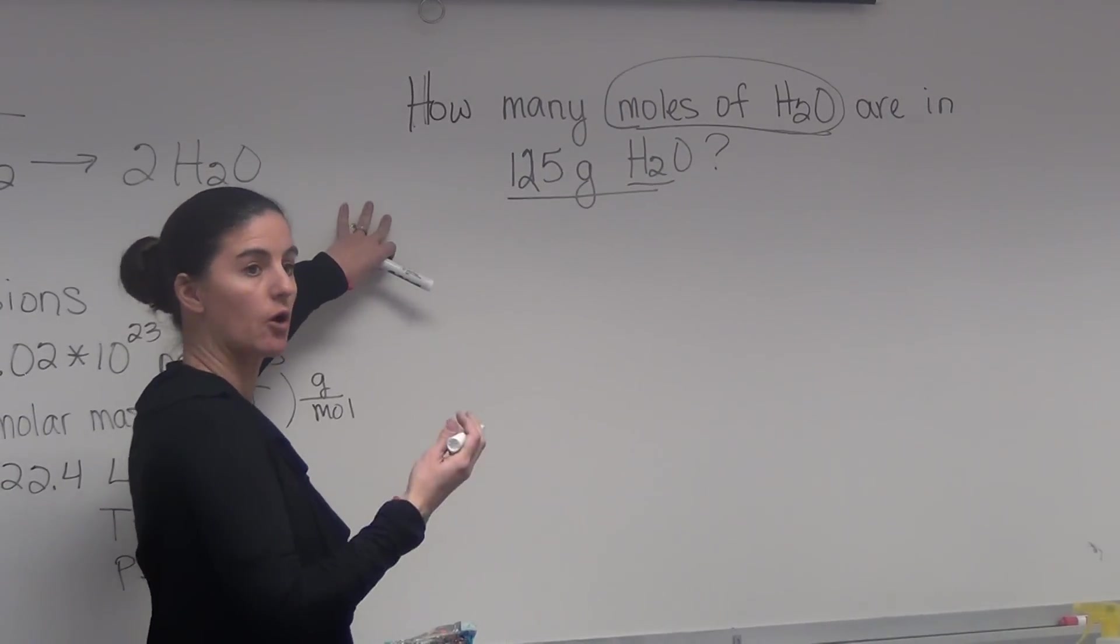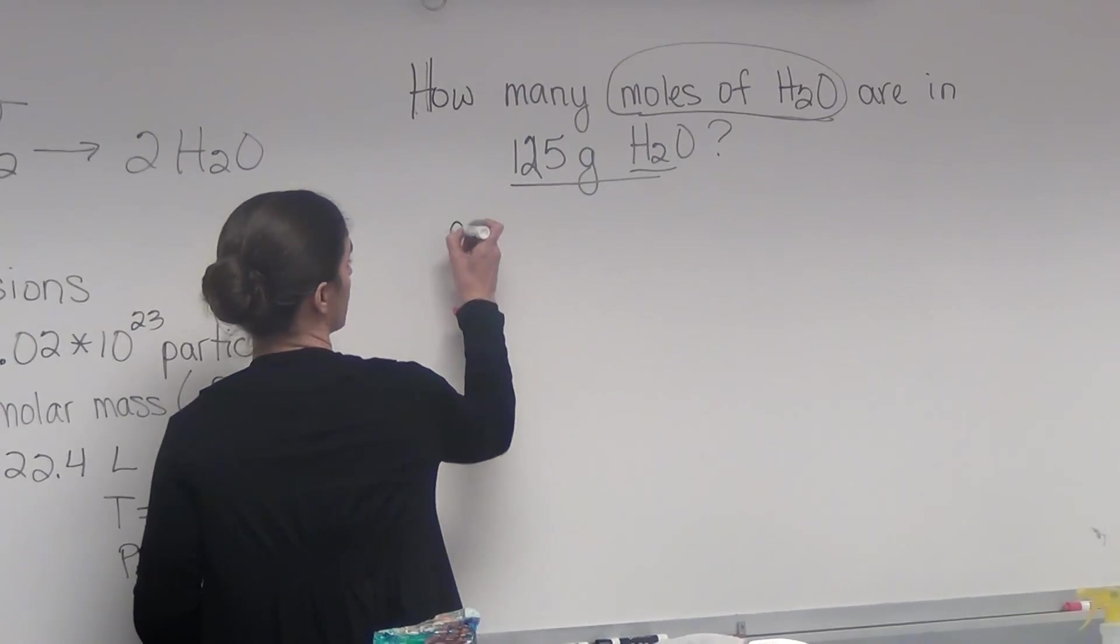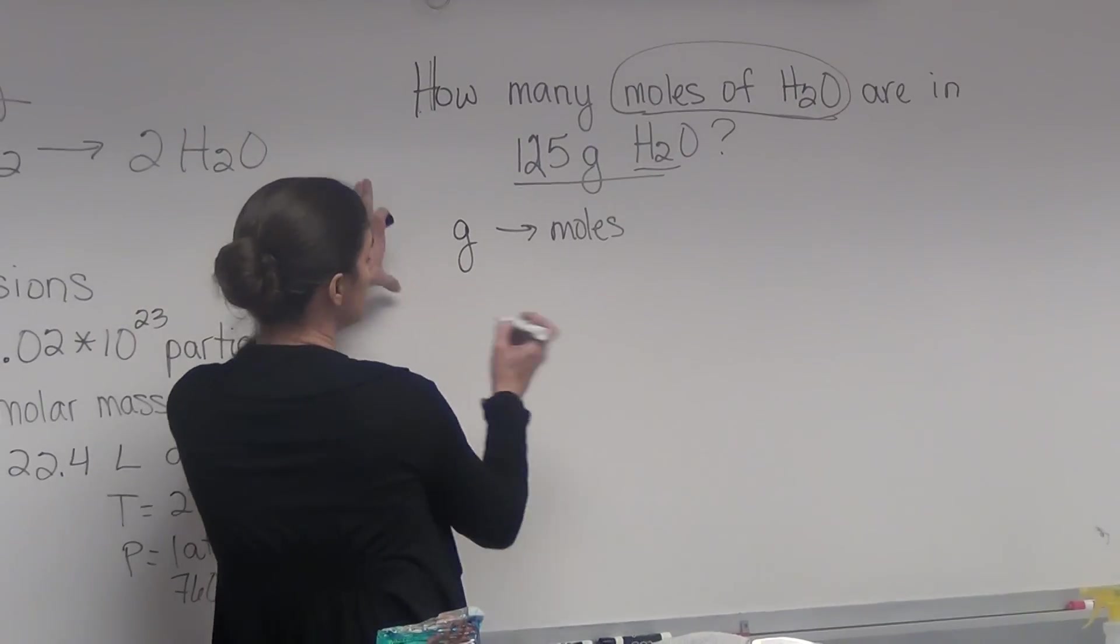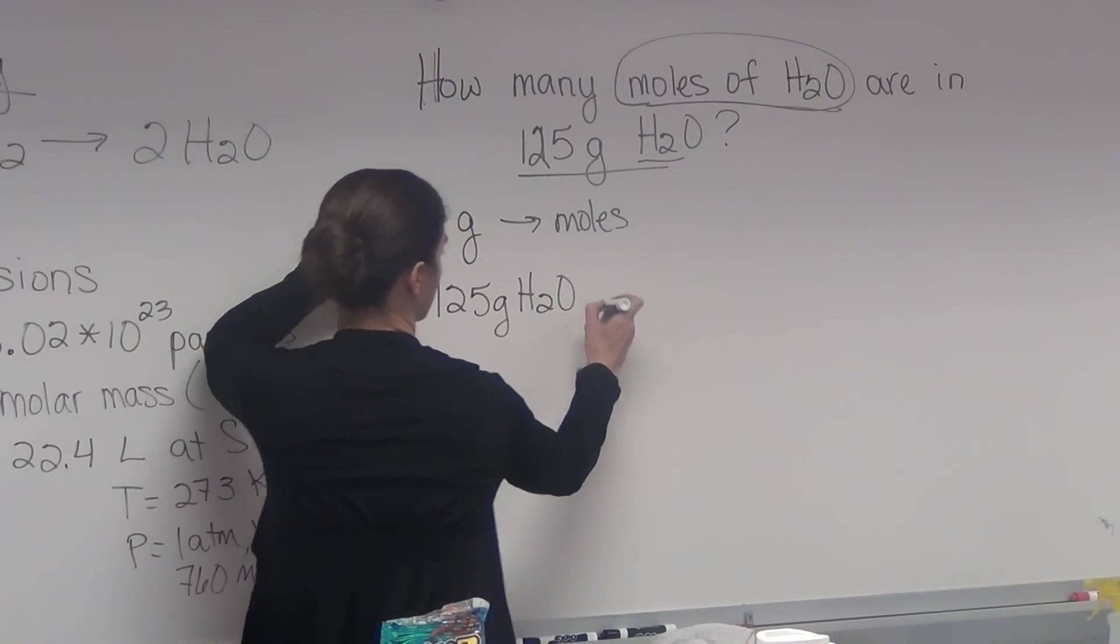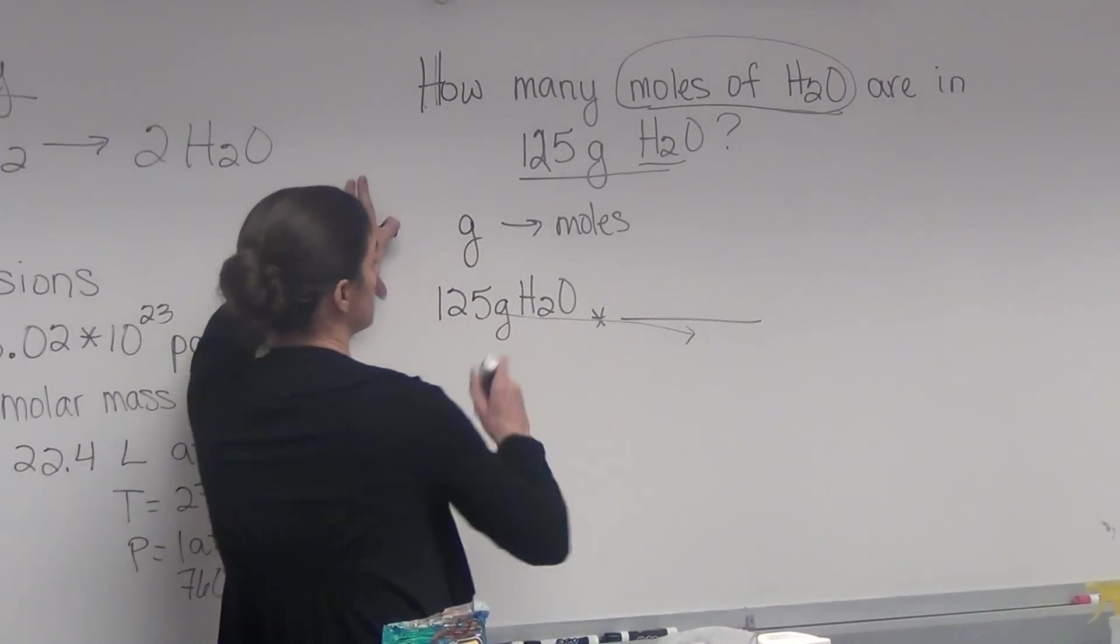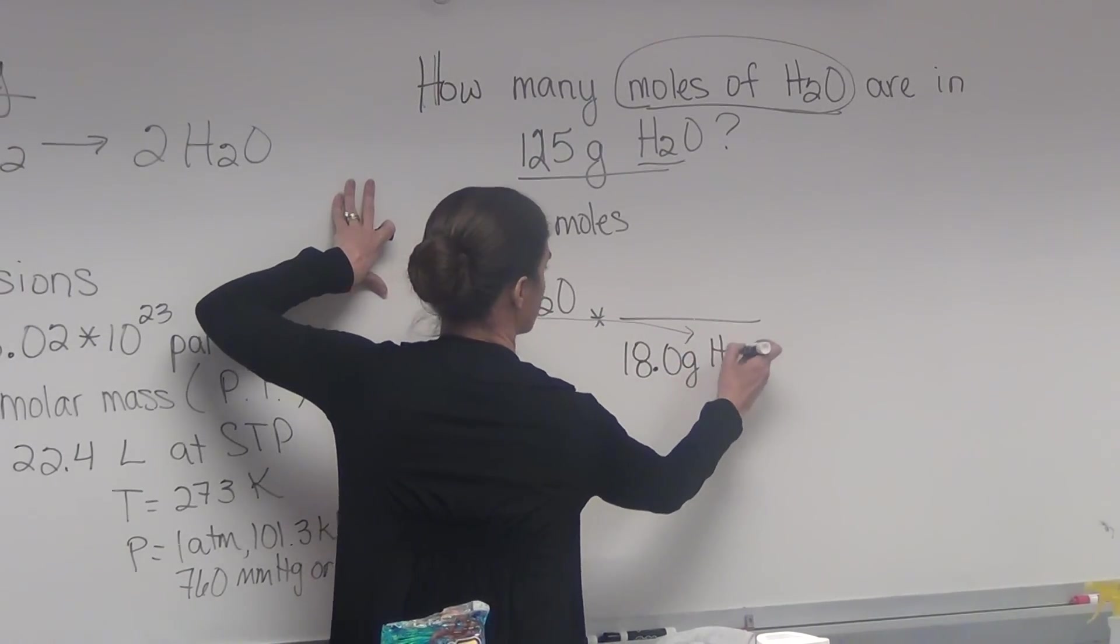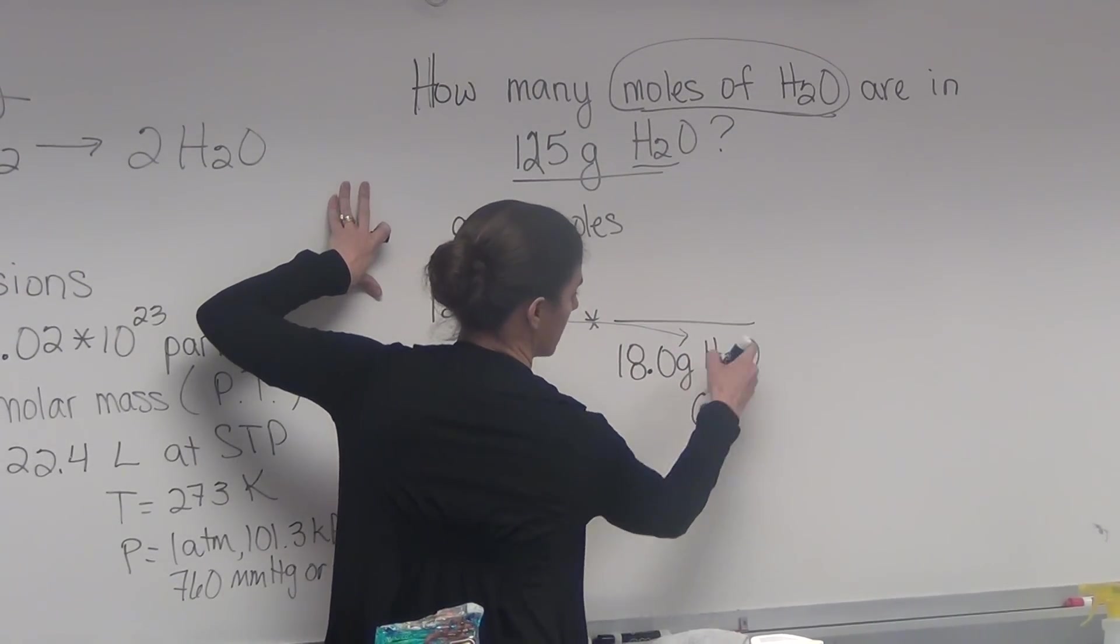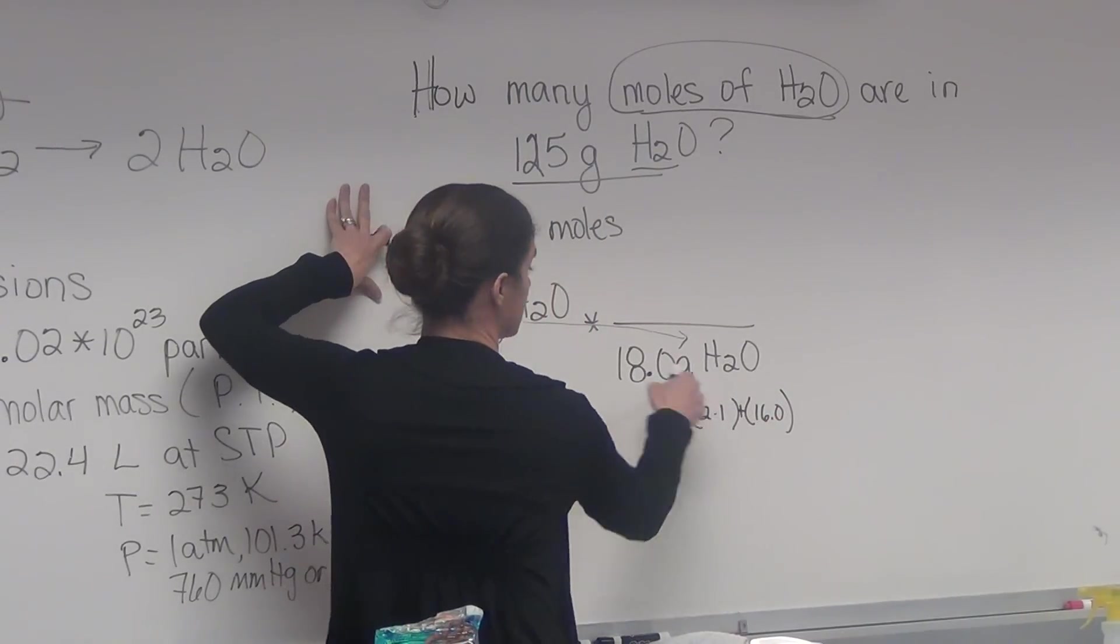So we've always looked at, well, how are we going to get from our given to what we're trying to find? In this case, we're looking at grams to moles. And we're going to use our molar mass. So we would always write our given down. This grams is going to come down here so that it cancels out. Look on the periodic table. Find our molar mass for water, which is 18. Again, that's 2 times the 1 for hydrogen, and we're going to add the 16.0 grams for oxygen. That gives us our 18.